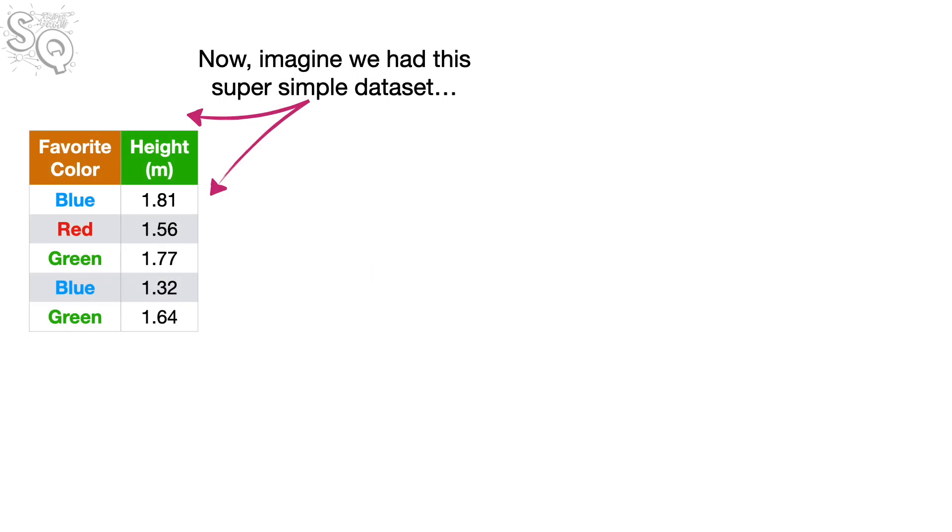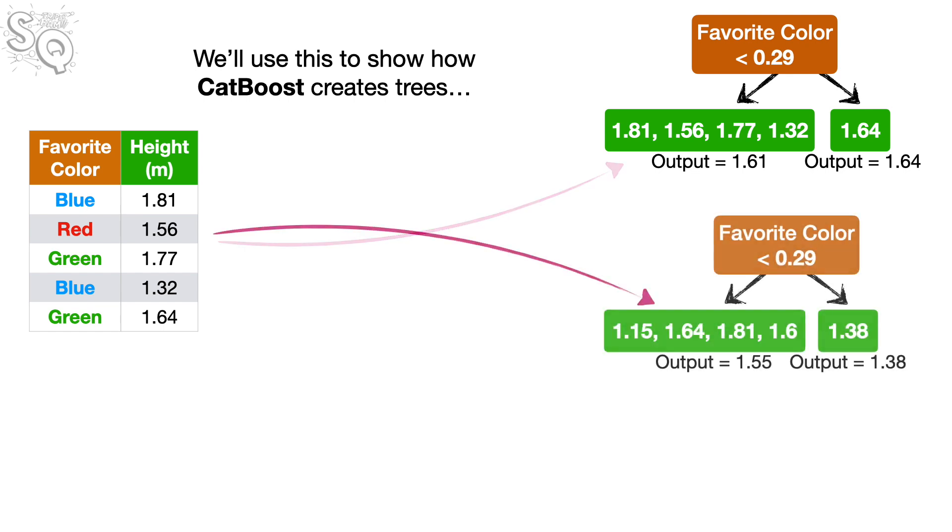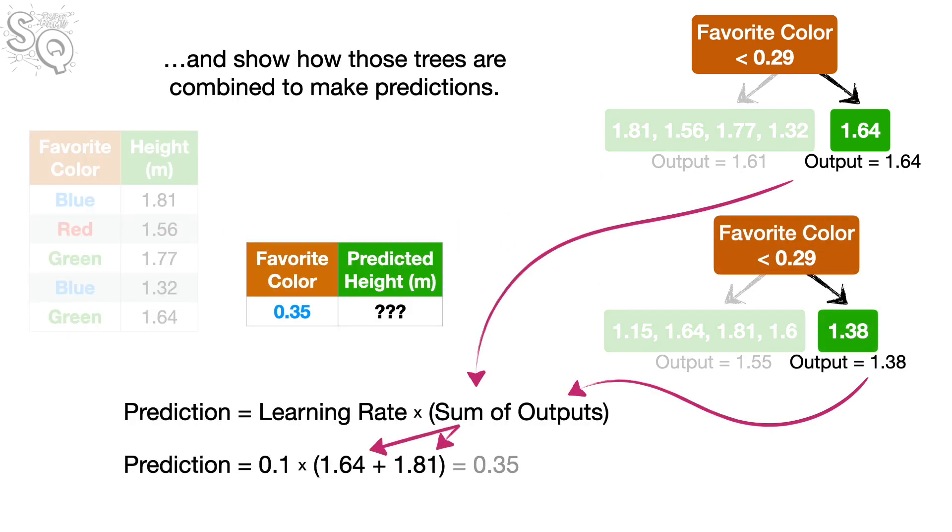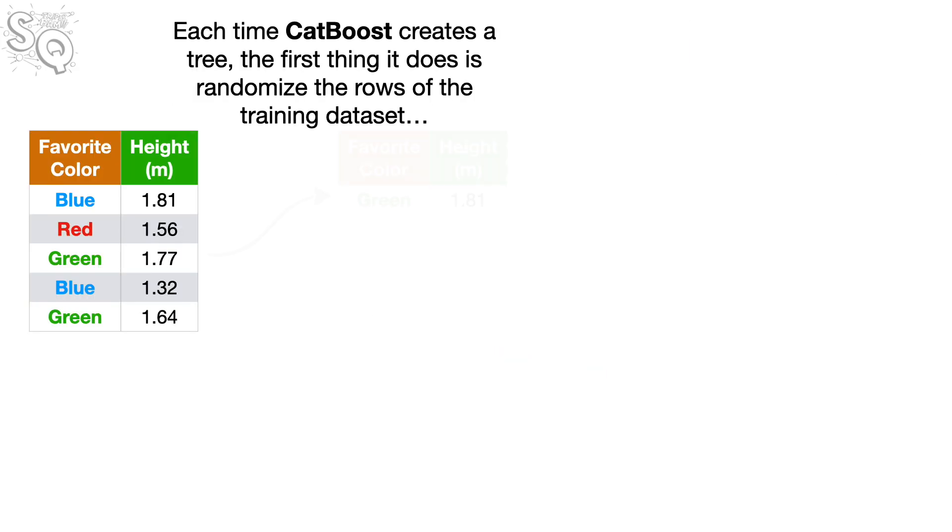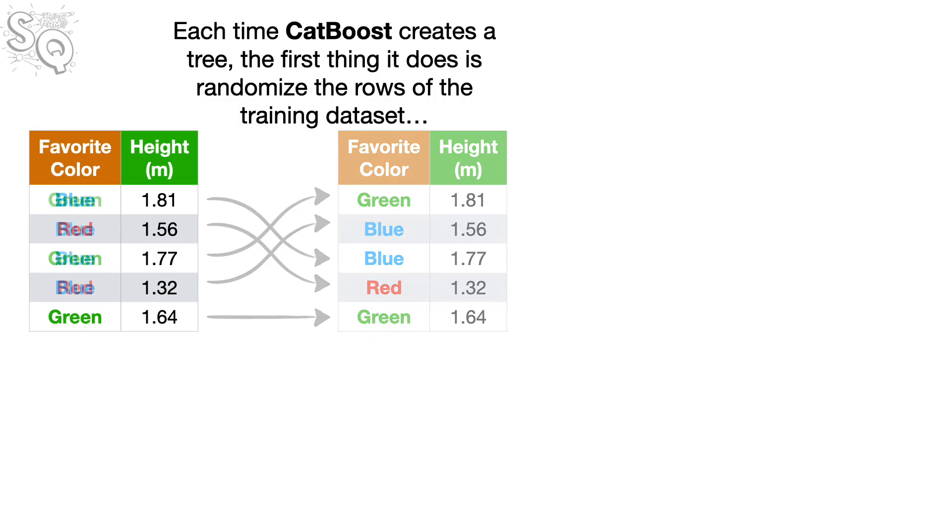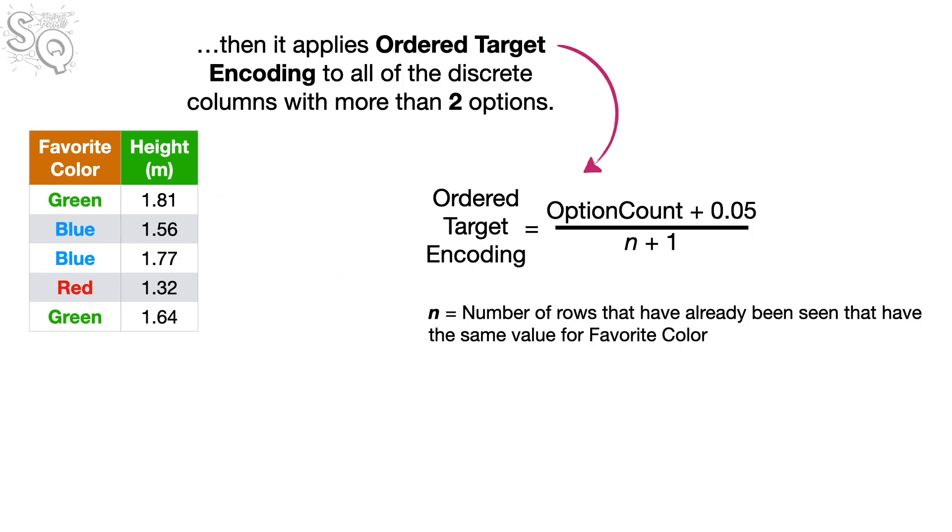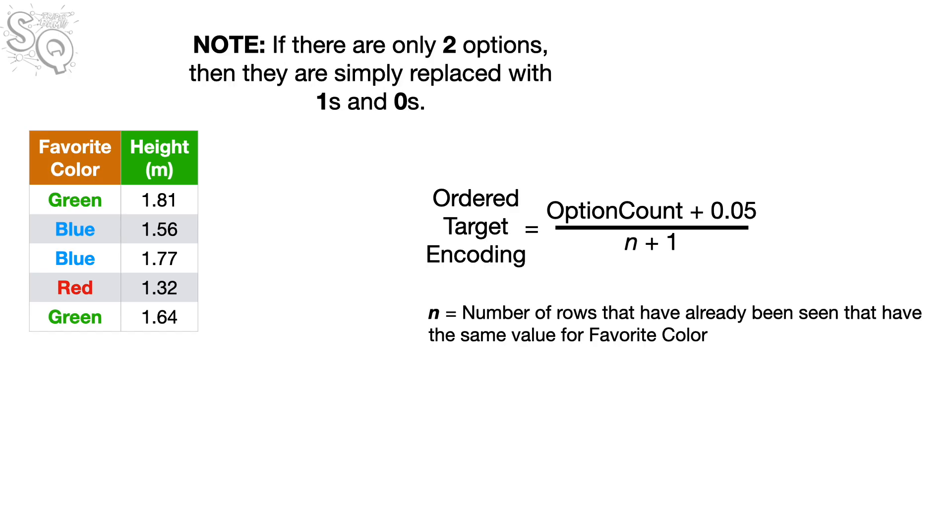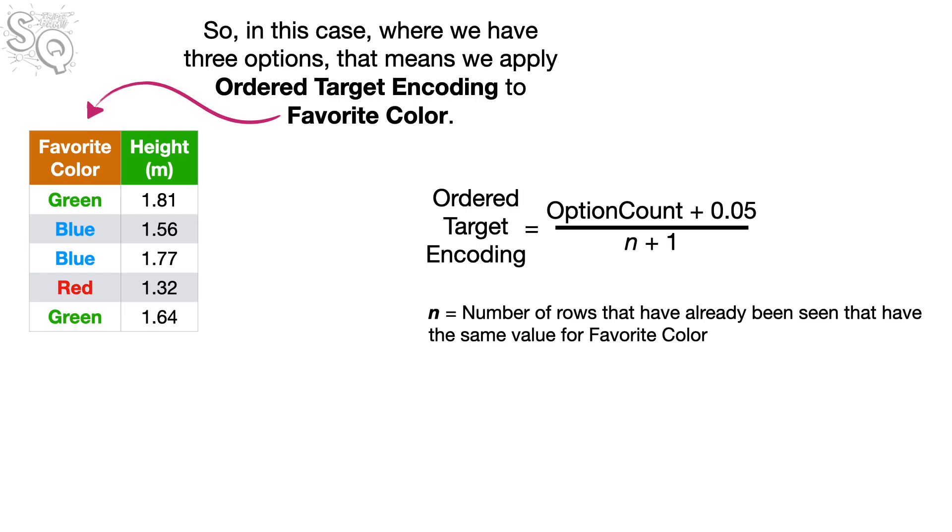Now, imagine we had this super simple data set that only uses favorite color to predict height. We'll use this to show how CatBoost creates trees and show how these trees are combined to make predictions. Bam. Each time CatBoost creates a tree, the first thing it does is randomize the rows of the training data set. And then it applies Ordered Target Encoding to all of the discrete columns with more than two options.